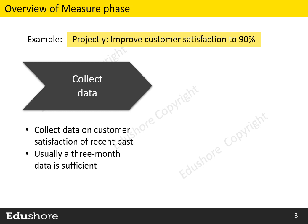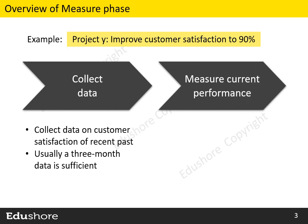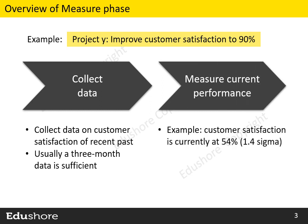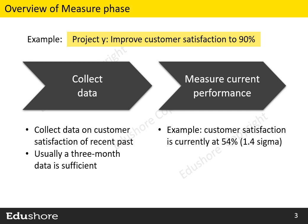After collecting the data, we need to measure the current performance. For example, we may say that the customer satisfaction is currently at 54%, which is 1.4 sigma. We use specific formulae to measure the performance in terms of sigma levels.